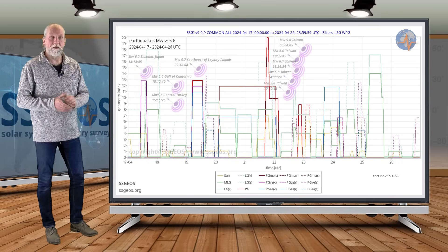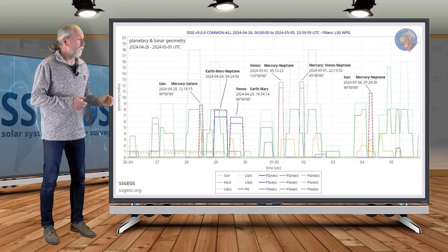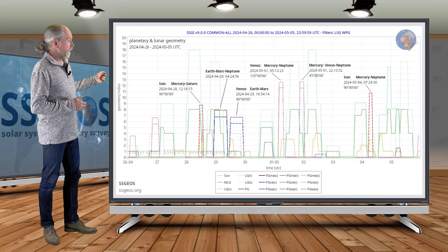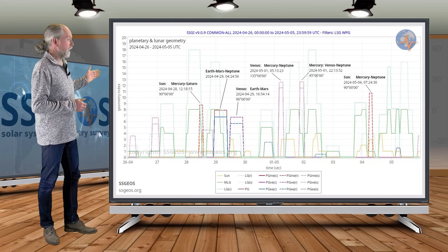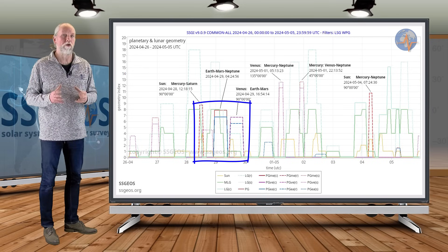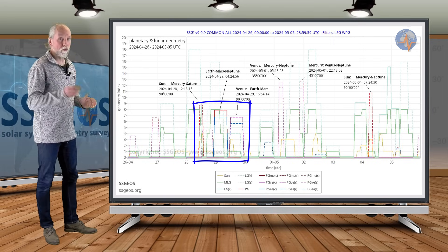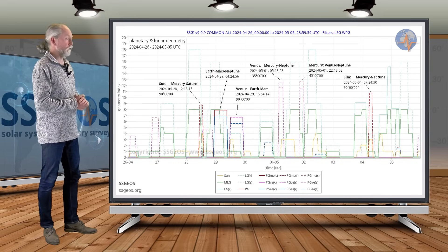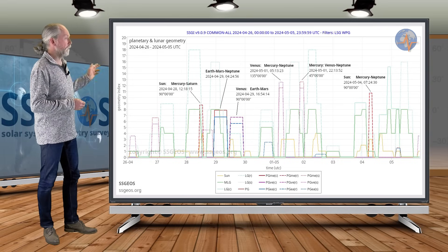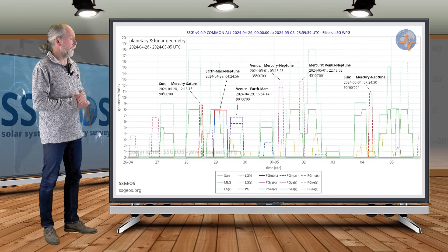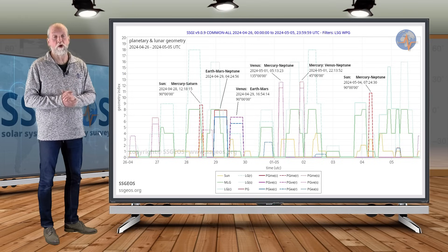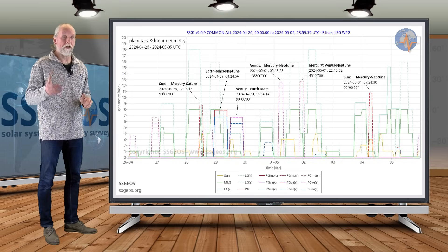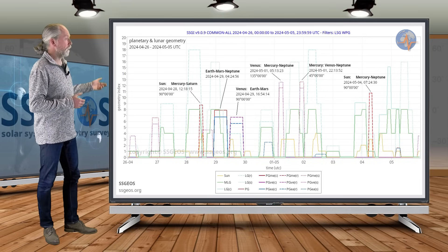Let's have a look at the next SGI graph up until May 5th. We have some interesting planetary geometry coming up on the 28th and 29th, a near convergence of some interesting planetary geometry to right angles and a planetary conjunction. That's Sun Mercury Saturn 90 degrees on the 28th, followed by Earth Mars and Neptune in a conjunction. This can result in a strong shake, possibly mid to high 6 magnitude, and that will be followed shortly after by Venus Earth and Mars also in a right angle.